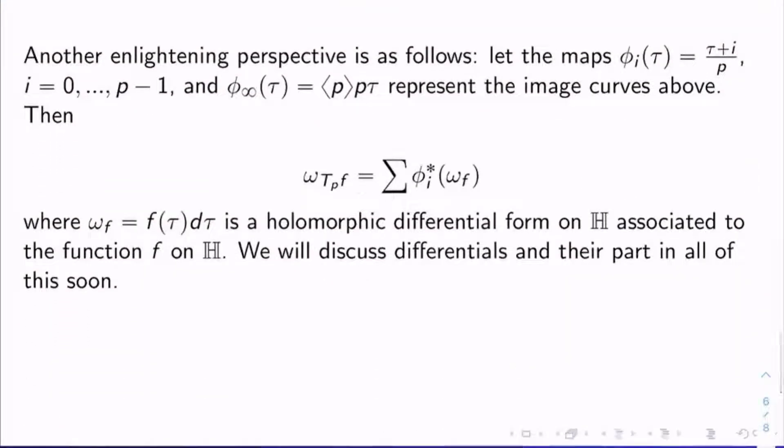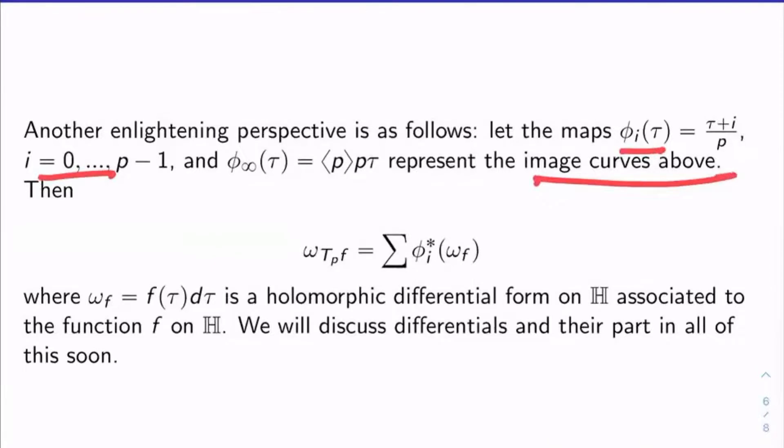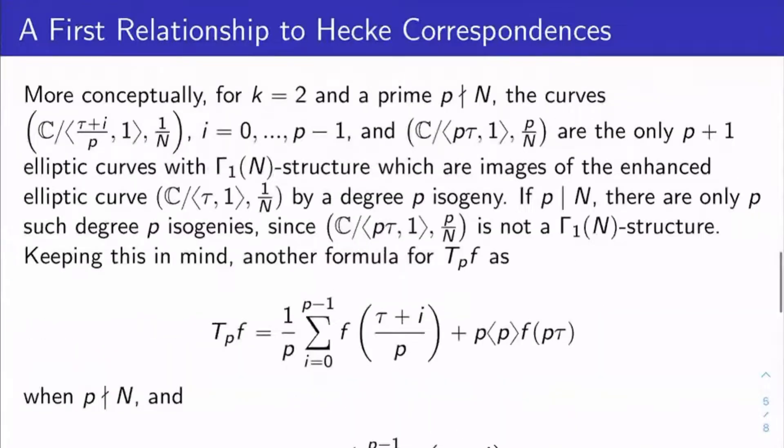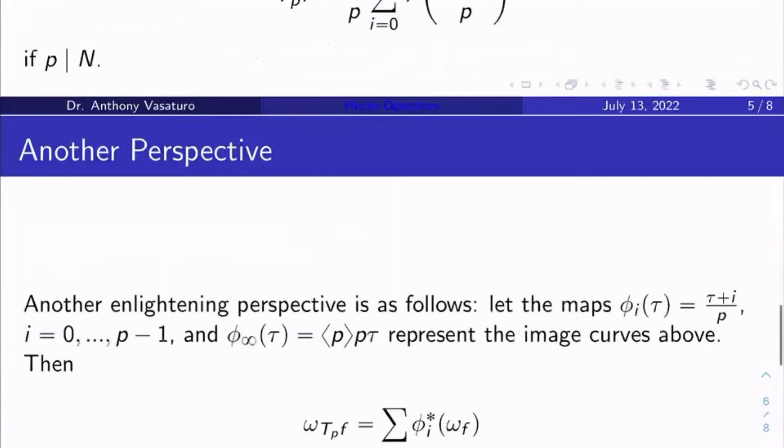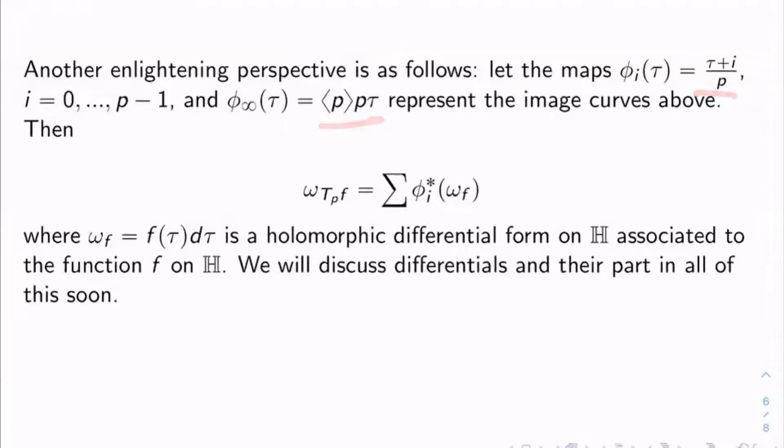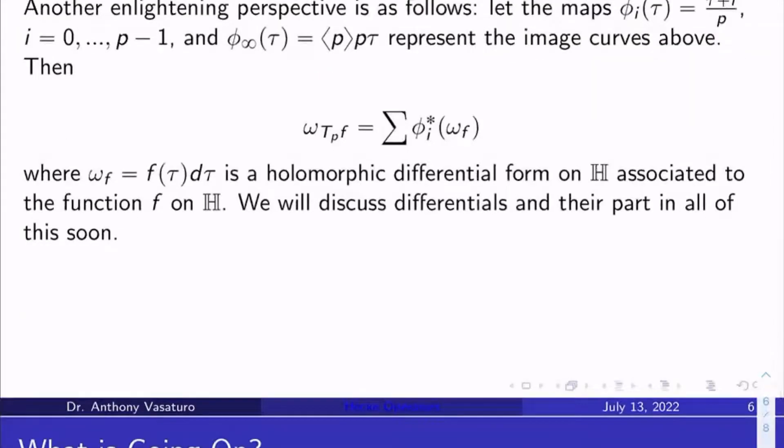So let me give you another perspective on Hecke operators. Let's consider the following maps from H to H. We'll call the first ones phi sub i of tau, and those will just be tau plus i over p, where i runs from 0 to p minus 1. And we'll also look at phi sub infinity of tau, which is diamond p acting on p tau by fractional linear transformation. So what you notice is there's kind of one map per image curve listed on the previous slide. There's one map per generator of lattice, which admits an image of the elliptic curve C mod the lattice generated by tau 1, 1 over n under a degree p isogeny.